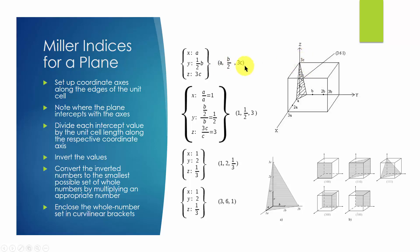Then we divide these values by the unit cell length along the respective axis. So a divided by a is 1 for x axis, one half of b divided by b is one half for y axis, and 3c divided by c is 3 for z axis.